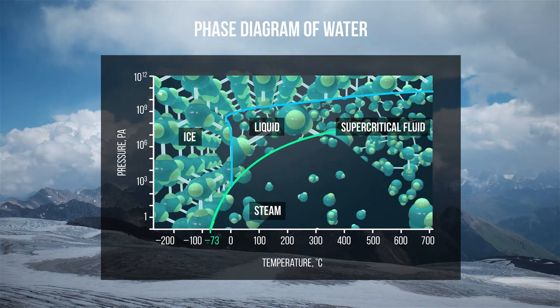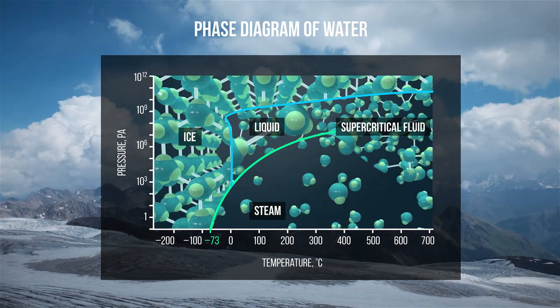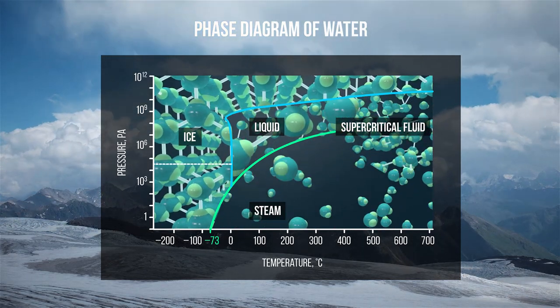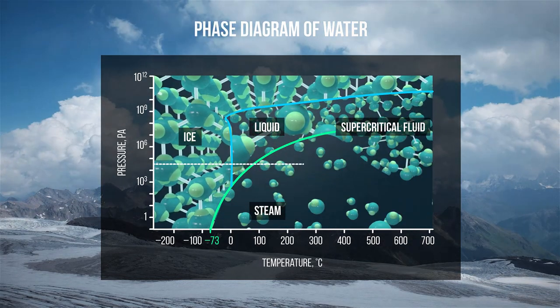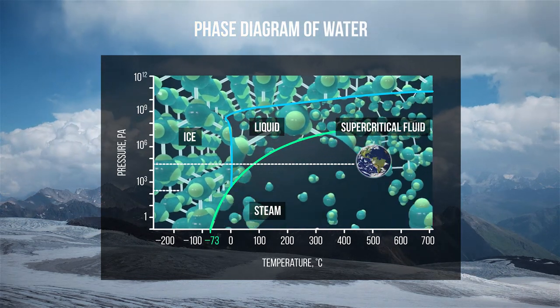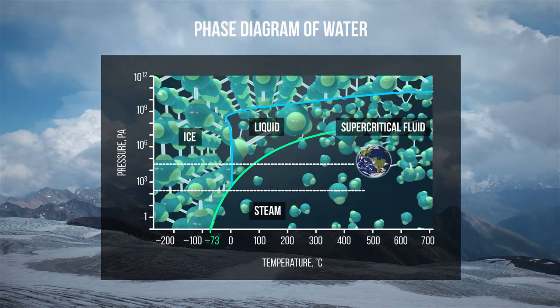The phase diagram of water shows that at the atmospheric pressure typical at the surface of the Earth, we can first melt the ice and turn it into a liquid, and then heat the liquid to its boiling point and turn it into steam. However, on Mars, ice will not melt with rising temperature, but immediately turn into steam.